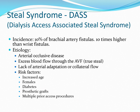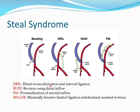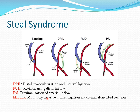Dialysis access-associated Steal syndrome has an incidence of about 10% of brachial artery fistulas — 10 times higher than wrist fistulas. Underlying etiology can be arterial occlusive disease, excess blood flow through the AV fistula (true Steal syndrome), or lack of arterial adaptation or collateral flow. Risk factors include increasing age, female sex, diabetes, prosthetic grafts, and multiple prior access procedures. There are multiple surgical options, including banding the proximal fistula to decrease flow, or procedures like DRIL, RUDI, and PAI. The Miller procedure can be done percutaneously, similar to banding.